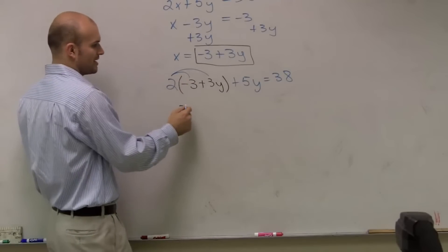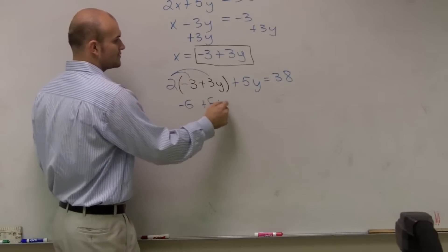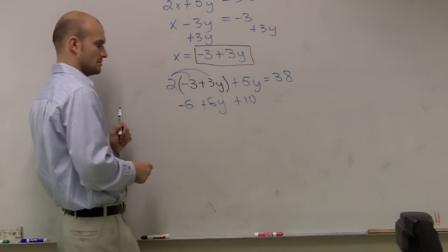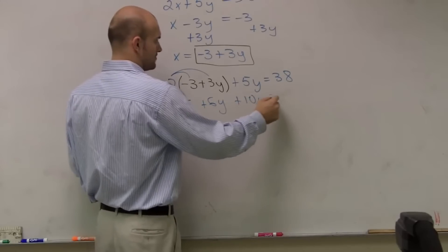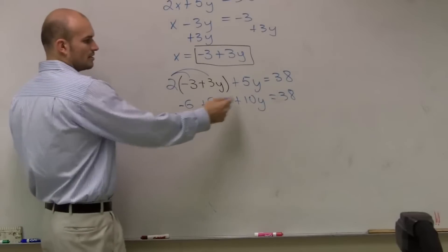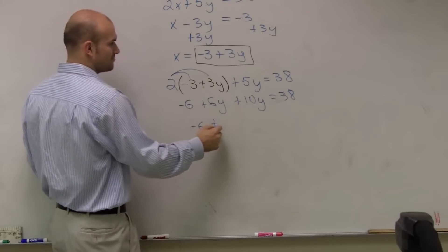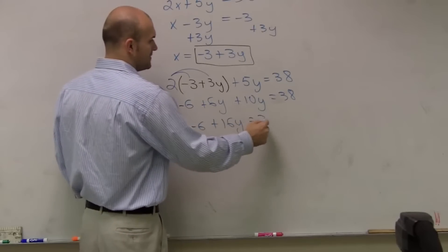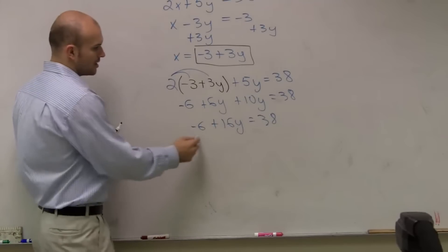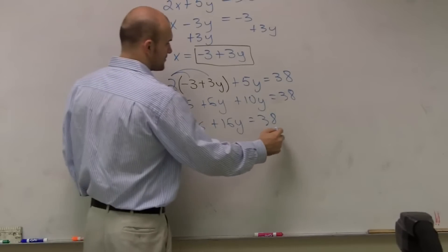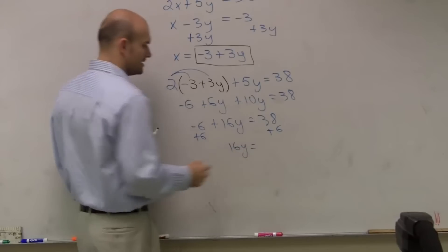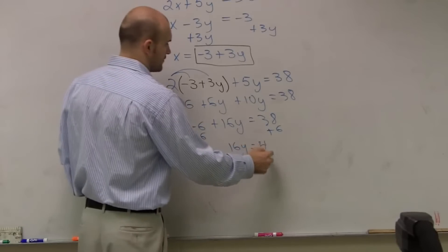Now I have to use distributive property. When I distribute, I have negative 6 plus 6y plus 5y equals 38. Combining like terms, I have negative 6 plus 11y equals 38.